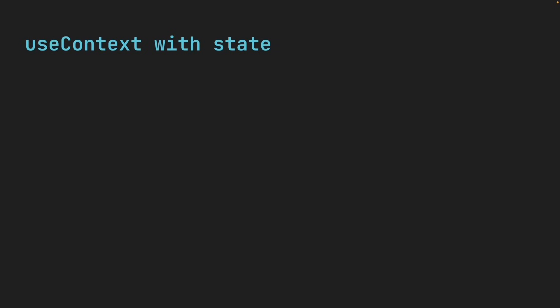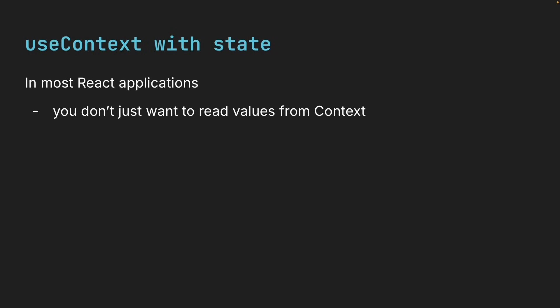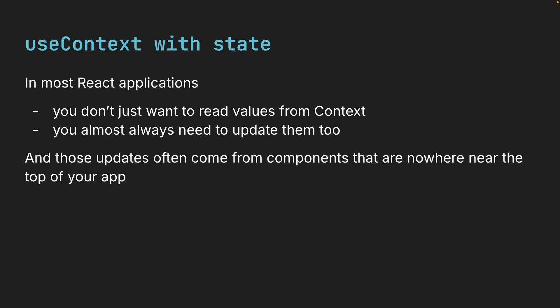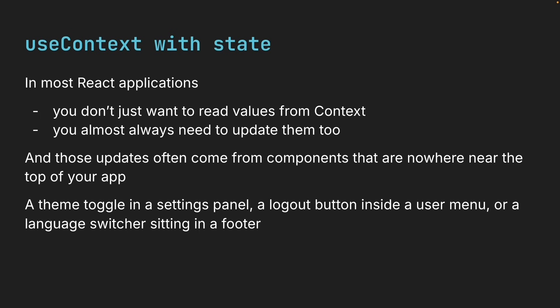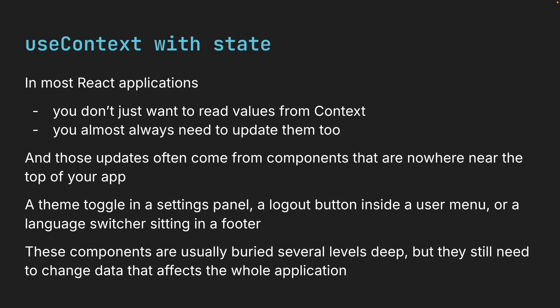Now that we have seen how context helps us eliminate prop drilling, there is one more piece we need to talk about. In most React applications, you don't just want to read values from context — you almost always need to update them too. And those updates often come from components that are nowhere near the top of your application. Think about a theme toggle in a settings panel, a logout button inside a user menu, or a language switcher sitting in a footer. These components are usually buried several levels deep, but they still need to change data that affects the whole application.